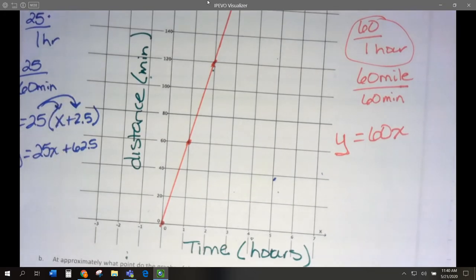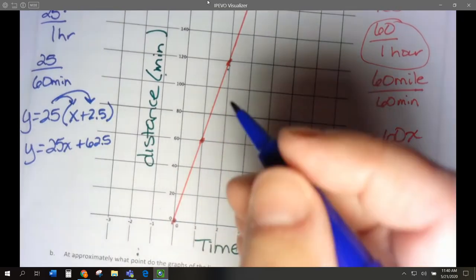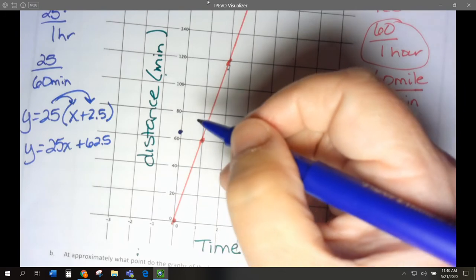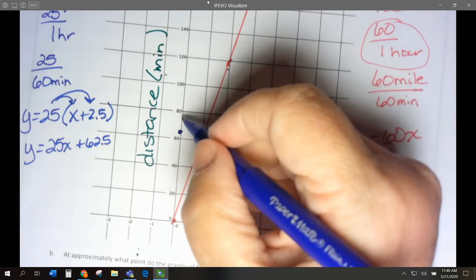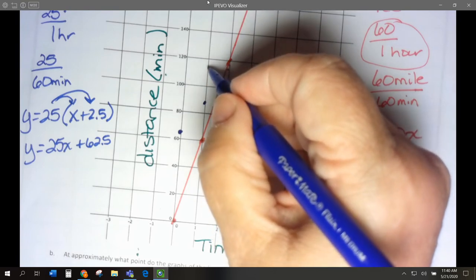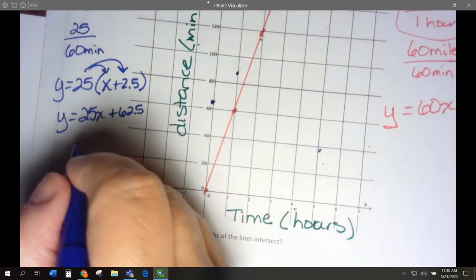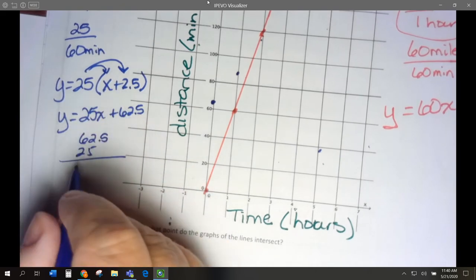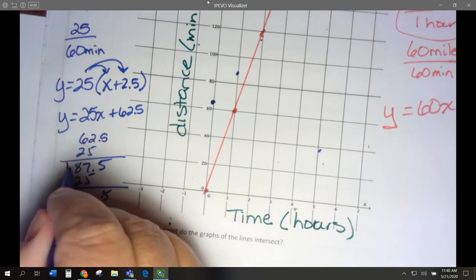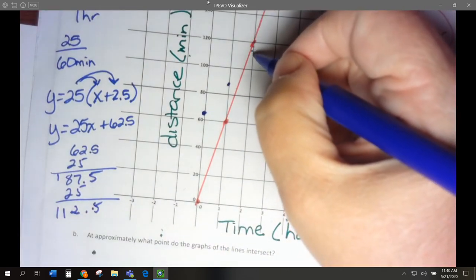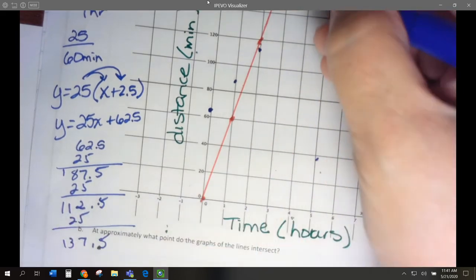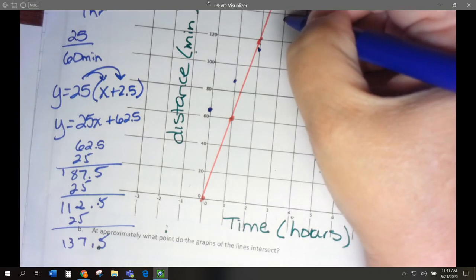Now let's do our blue car. Now our blue car has a y intercept of 62.5. Remember got that head start. So we'll put that right about there. And then it goes up 25. So this is going to go up 25 in an hour. So right about there. It's going to go up another 25 in an hour. So actually I could do this. 62.5 plus 25 would be 87.5, plus another 25 would be 112.5, so that'll be about there. Add another 25 and I'm going to get 137.5. It's going to be about there. And I'm going to connect these.